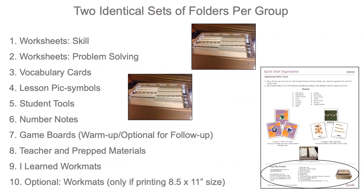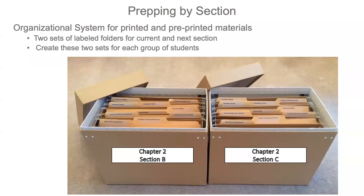This step may have already been completed when you were organizing your manipulatives and content kit pieces. Once you have labeled the folders into two identical sets, you now have one set for the current lessons you are teaching, and the second set for the next section of lesson materials. Place those folders in a designated space within your classroom. Be sure that the folders are separate so that the materials don't become confused and unmanageable. This is the first step in prepping by section, and once complete, you do not need to complete it again.